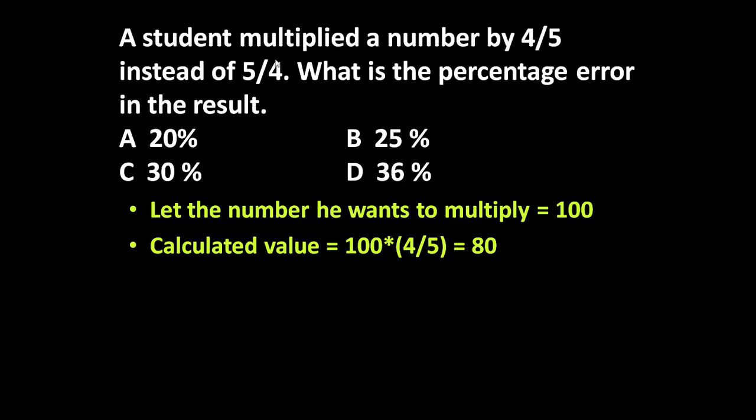But he should have multiplied by 5/4, so the correct value is equal to 100 times 5/4, which equals 125. So the correct answer is 125, but he got the answer as only 80.